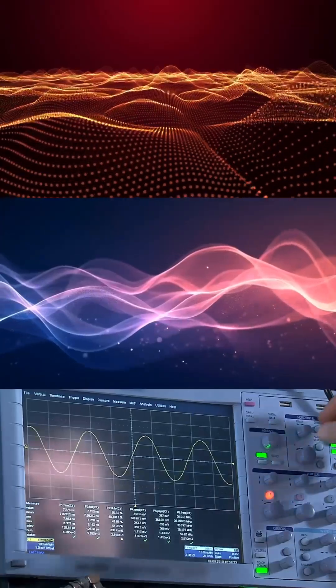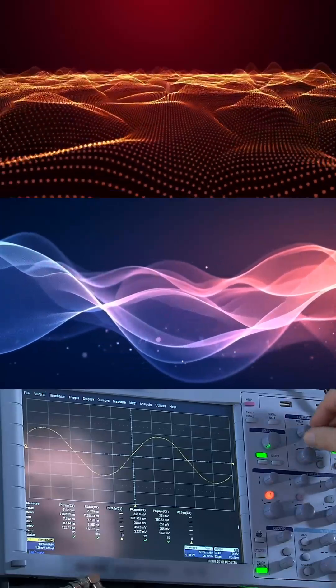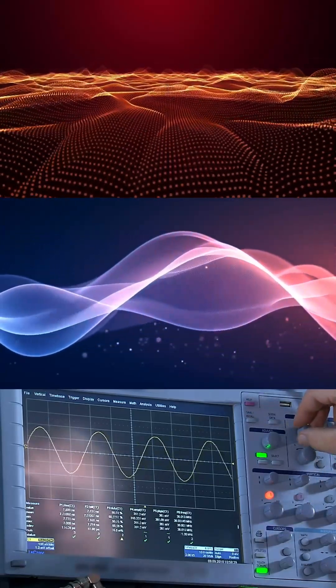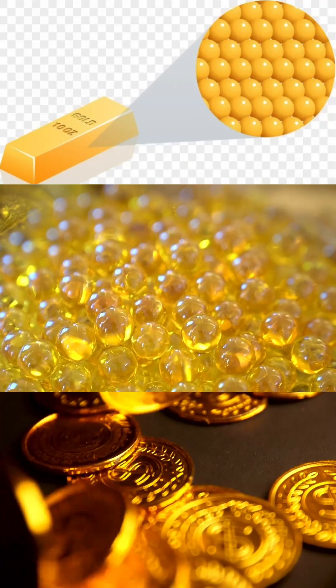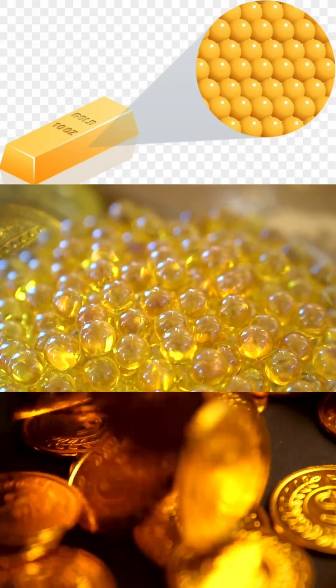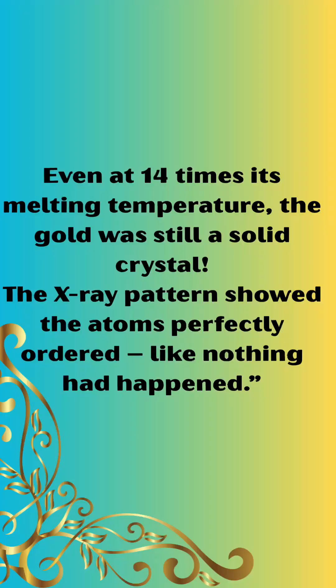Just a few trillionth of second later they fired powerful x-rays to see what the gold looked like. And guess what, even at 14 times its melting temperature the gold was still a solid crystal. The x-ray pattern showed that the atoms were perfectly ordered like nothing had happened.